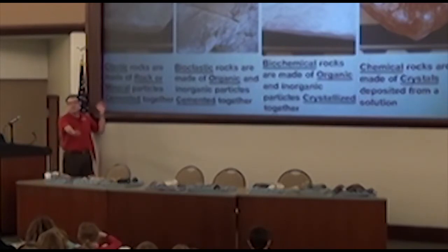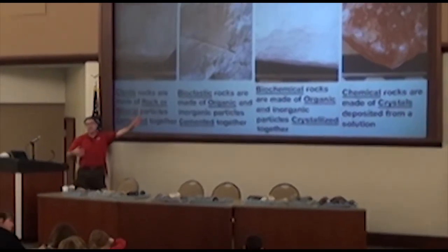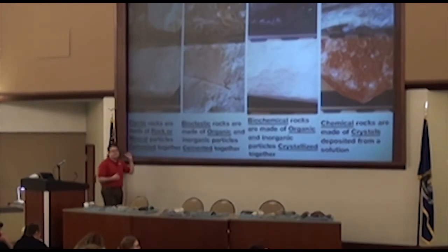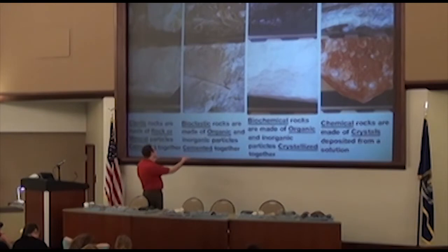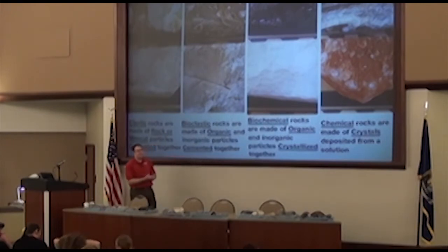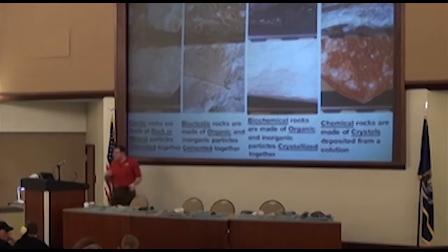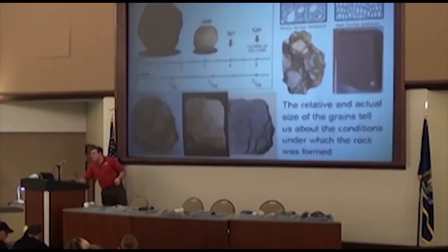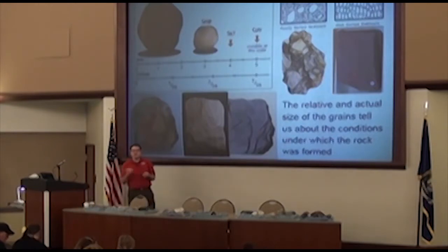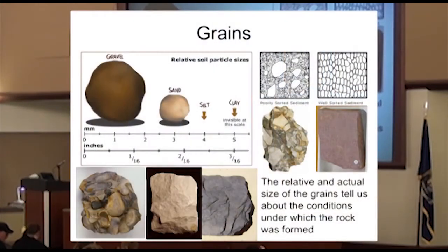Does everybody understand these four ways of breaking down sedimentary rocks? There's not actual physical pieces you're going to see in the coal — it's more plastic. Next we're going to talk about grains. Grains are those little clasts, the pieces that clastic sedimentary rocks are made of. The grains could range in size from anything — from huge down to tiny.